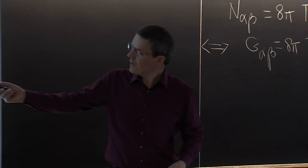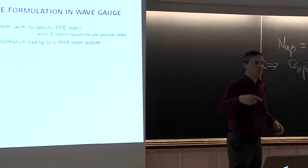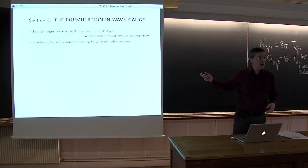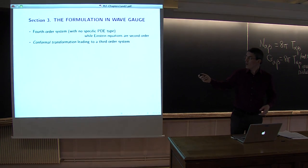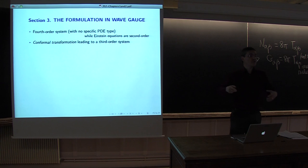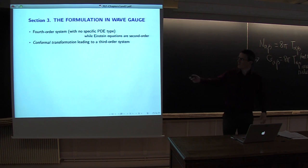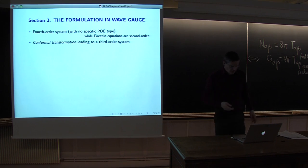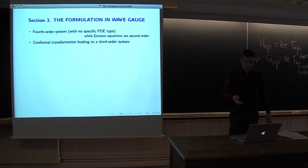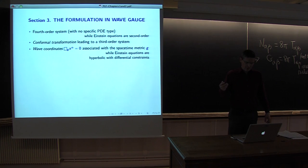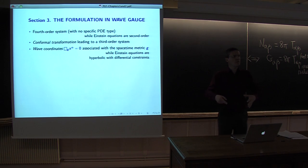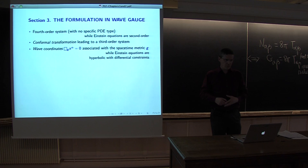The system of modified gravity is fourth order because it involves two derivatives of the scalar curvature of the spacetime, while the Einstein equations are second order. So at first it's not clear why the two models should be equivalent. We will see that by doing a conformal transformation involving the scalar curvature of the spacetime. We will next introduce wave coordinates and choose a gauge so we can see the hyperbolic feature of the modified gravity equations appear.